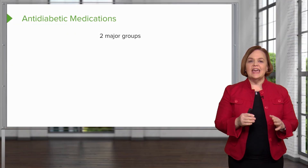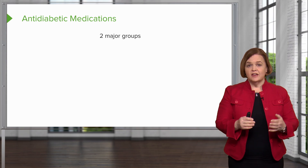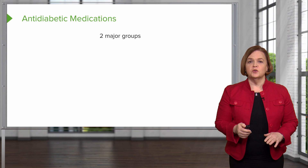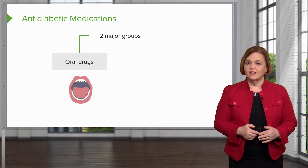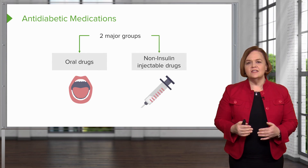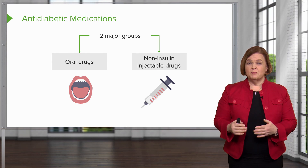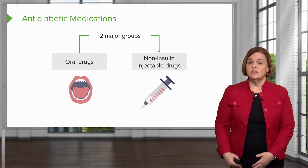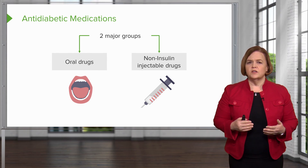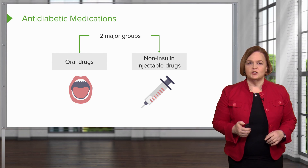When we're addressing antidiabetic medications, we're looking at drugs that are against diabetes — so they're going to help us lower blood sugar. There are two major groups: oral drugs, and non-insulin injectable drugs. These are drugs we use to treat diabetes that can't be swallowed — they have to be injected, and they're not insulin. Most of the drugs we'll discuss fall into the oral category, but there are a couple we'll talk about in the injectable category.